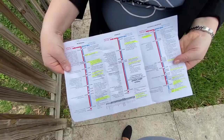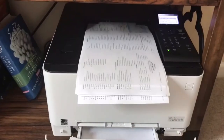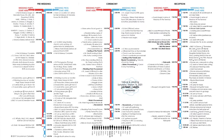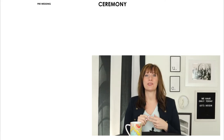This document is one page back and front, printed on a legal sheet of paper. On the timeline side we use a subway map to separate the day into three sections: pre-wedding, ceremony, and reception.